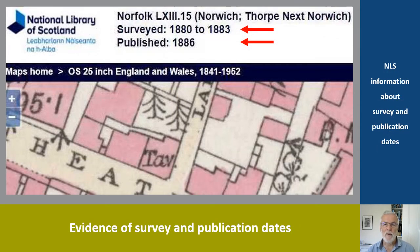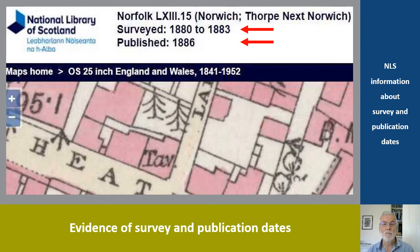Ordnance Survey maps and the National Library of Scotland digitised versions provide information about survey and publication dates. In this example, publication was in 1886, but the surveys were carried out between 1880 and 1883. It means that anything built in 1884 or 1885, for example, before the map was published, wouldn't be shown.